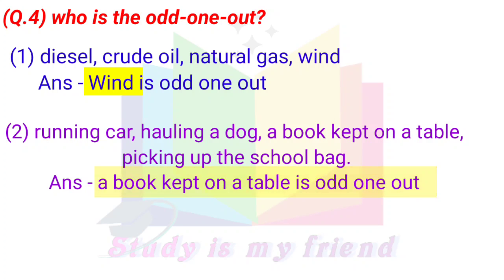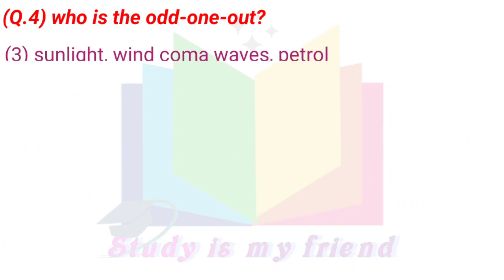2. Running car, howling dog, a book kept on a table, picking up the school bag. Answer: A book kept on a table is the odd one out.